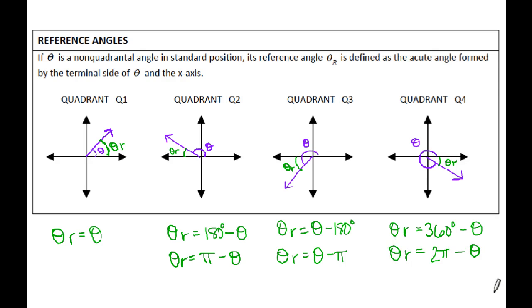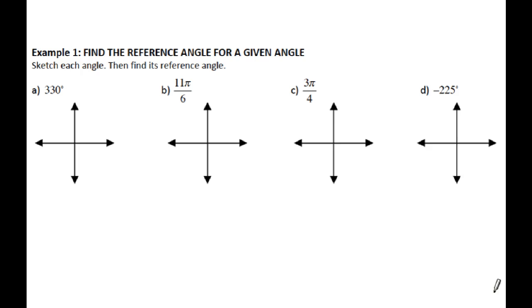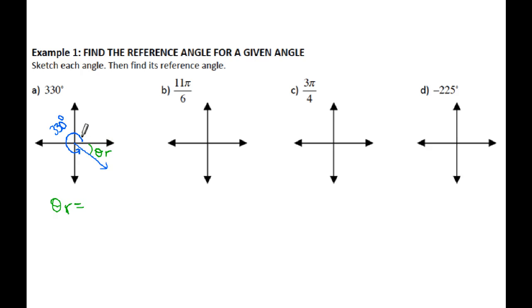It's very helpful when doing reference angles to actually sketch it out so you can see what quadrant you're in. For 330 degrees, sketching it shows it's in the fourth quadrant. Going all the way around to here is 330 degrees, so this wedge is my reference angle. A full rotation is 360, so 360 minus 330 gives a reference angle of 30 degrees.